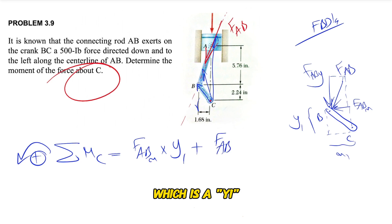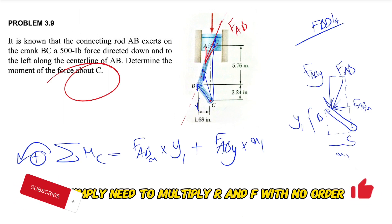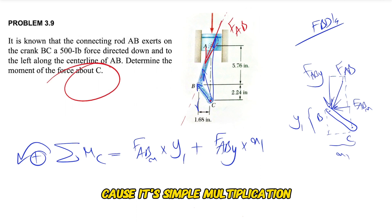Again, since we have the vertical distance, we simply need to multiply r and F with no order, because it's simple multiplication, so it really doesn't matter. For finding FAB x and FAB y, we need to find one of these angles in here.